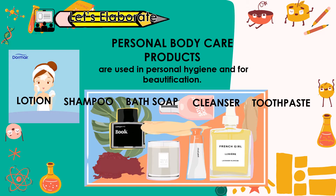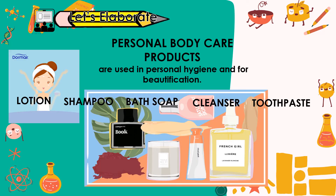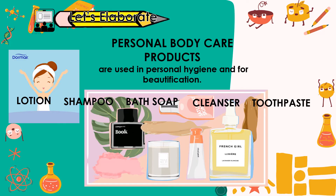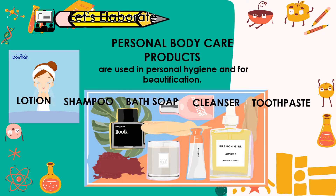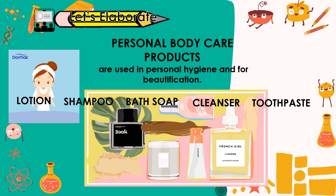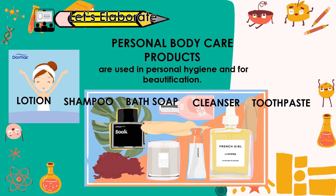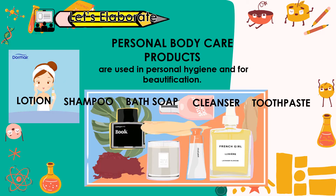One classified group of useful materials is what we call personal body care products. These are used in personal hygiene, in caring for our body, and for beautification. Some examples are lotion, shampoo, bath soap, cleanser, and toothpaste.